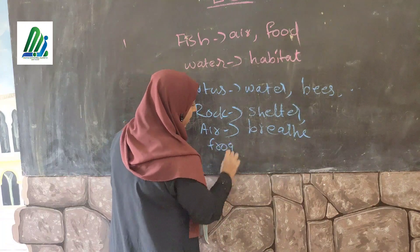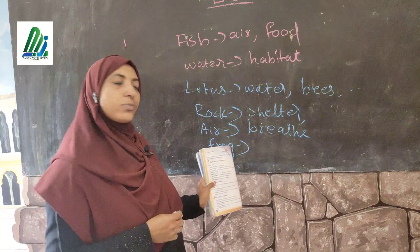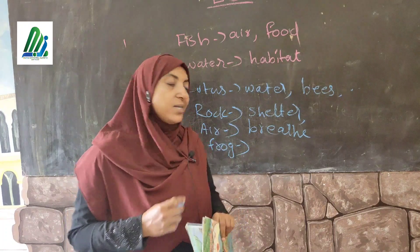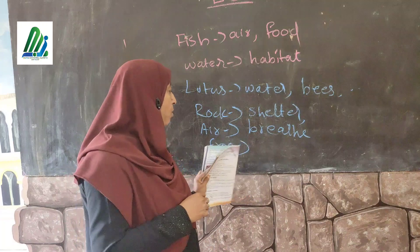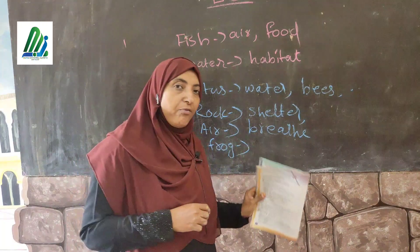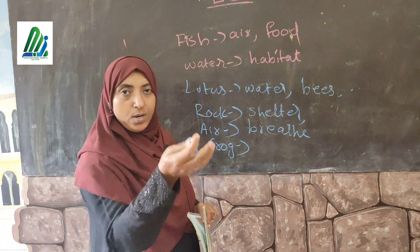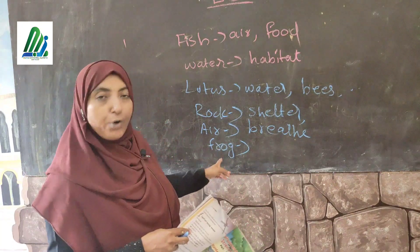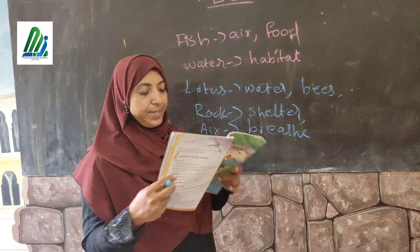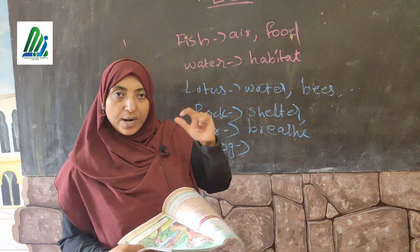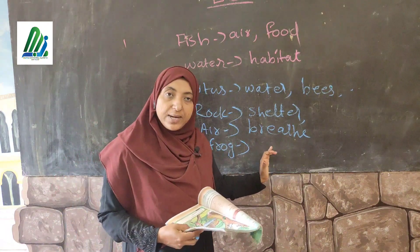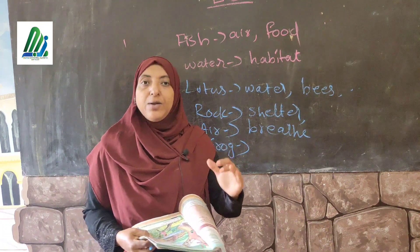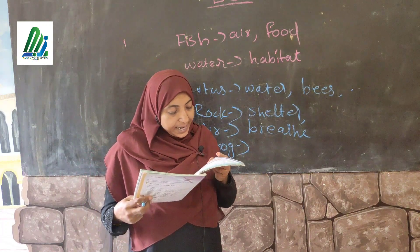Next, frog — frog lives in water and it can also live on land. Land or soil is an abiotic factor and water is also an abiotic factor, but frog is a biotic factor. Frog gets its food from water and from the land. In the case of water snake also, the water snake lives in the water and gets its food from the water, feeding on small organisms found there.